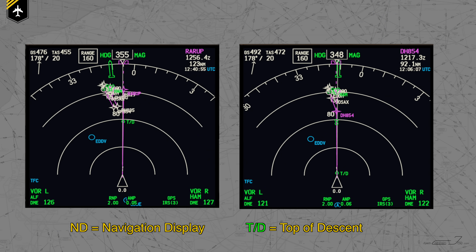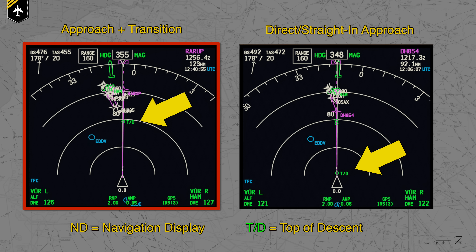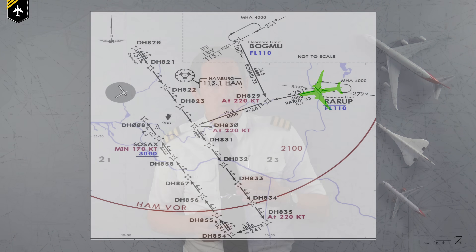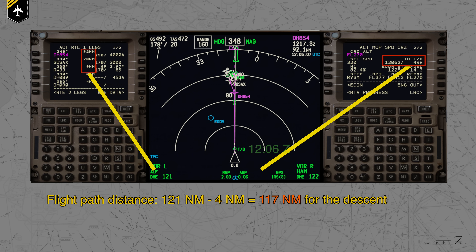But there's a big flaw with that top of descent point on the ND, and I'll show you in an example why it's important you know a few thumb rules. Let's assume we're approaching into Hamburg, Germany. We've got the approach set up, but as you see here on those two NDs, the top of descent points are at different locations. One ND shows a direct approach towards runway 33, and the other includes a so-called transition. A transition is an approach procedure to slow down incoming traffic and makes it easier for the approach controller to stack the planes before handing them over to the tower controller.